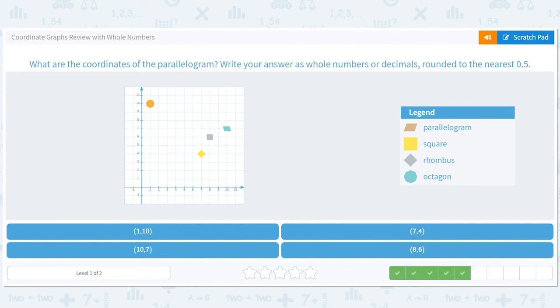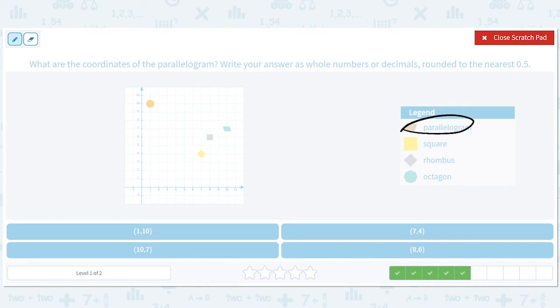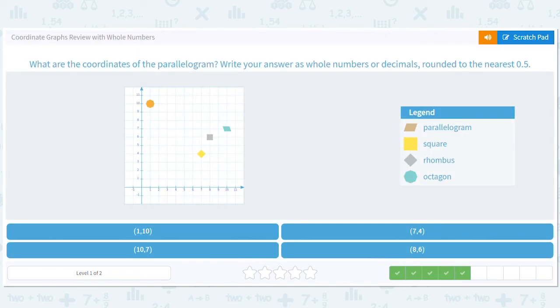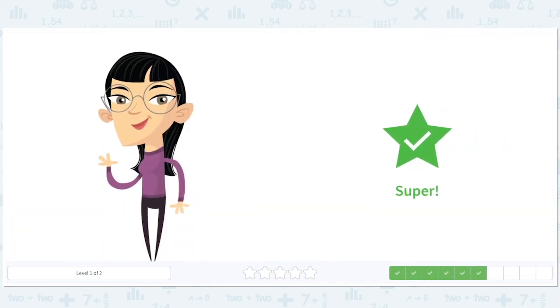What are the coordinates of the parallelogram? This is backwards - it's making you learn your shapes. Parallelogram, which one is that? That one. So what are the coordinates? That looks like ten to the right, and up seven. So (10,7). Super!